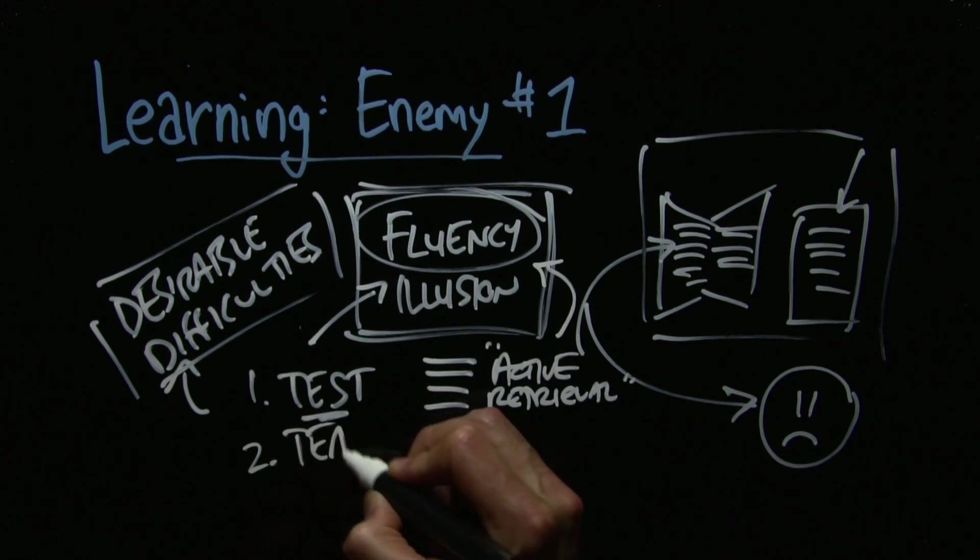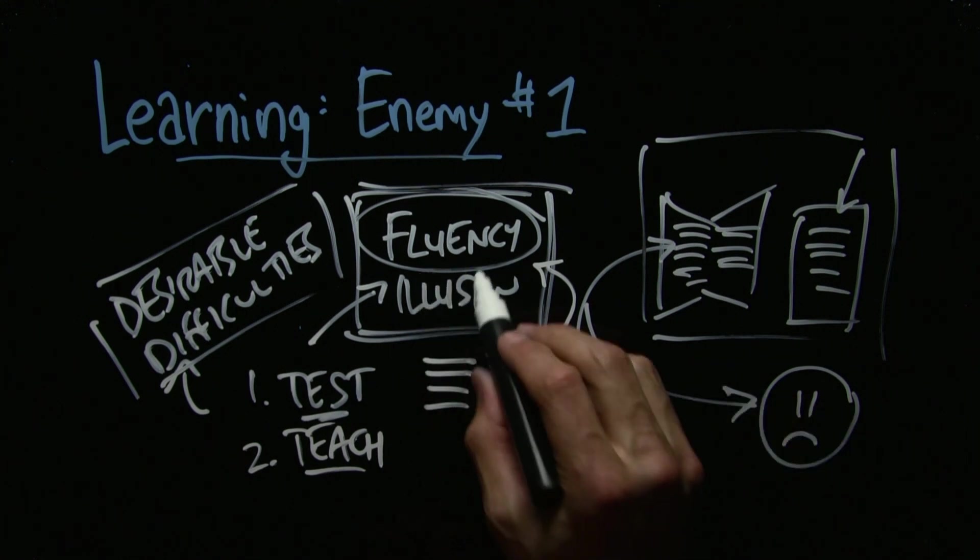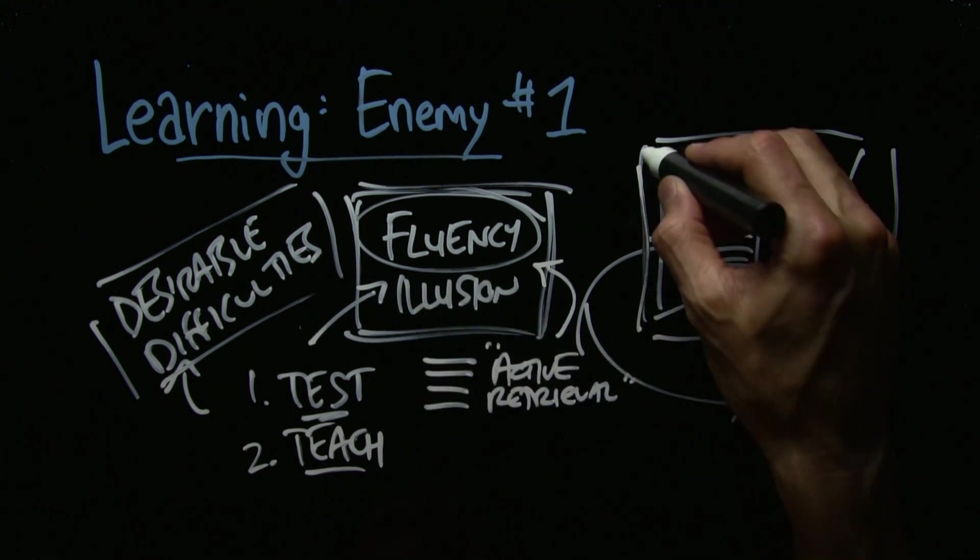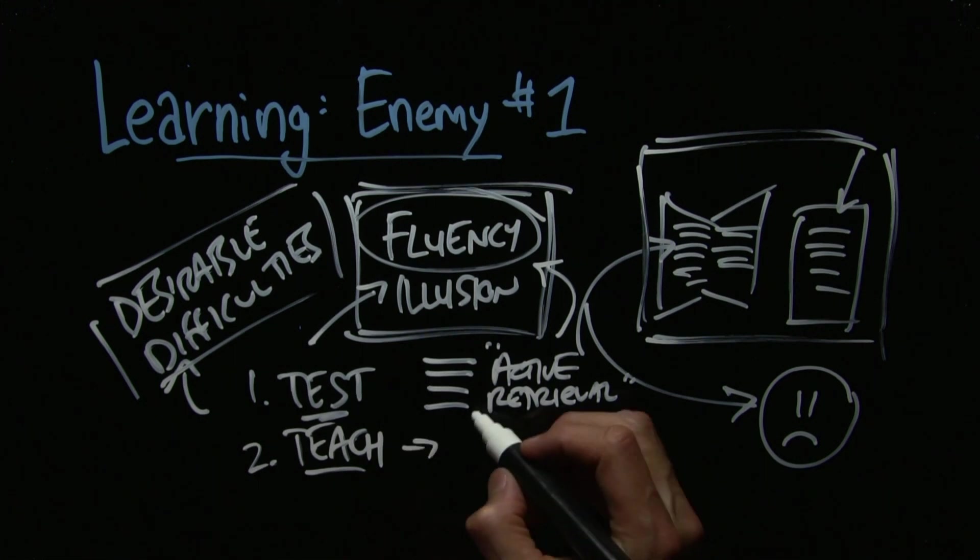Another way to do it is to teach other people. That's a good way to test your fluency illusion. If you really know this stuff so well, go explain it to someone like they're five years old, is how Barbara Oakley describes it, citing reddit.com. Go teach somebody what you know.